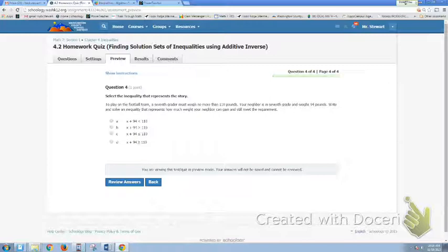It says, to play on the football team, a 7th grader must weigh no more than 110 pounds. Your neighbor is in 7th grade and weighs 94 pounds. It says, write an inequality, write and solve an inequality that represents how much weight your neighbor can gain and still meet the requirement. Okay, so I'm going to take those away now. Yeah, some important pieces of information. No more than 110 pounds. Your neighbor is already 94 pounds.